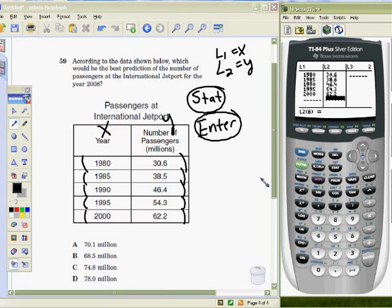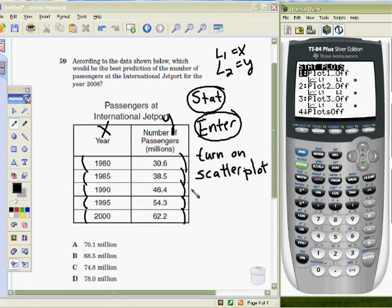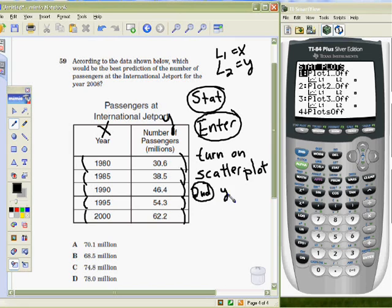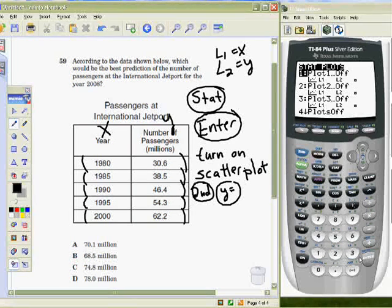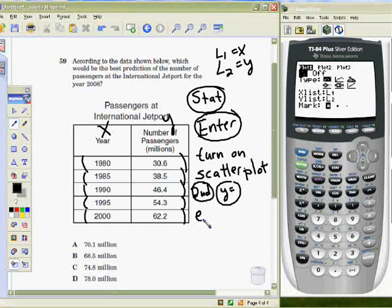Okay, once you have everything entered in, we want to look at the scatter plot that these points create. So we have to do two things. First of all, we have to turn on our scatter plot. The way we do that is 2nd y equals. And we'll see that they're all turned off. We just want to turn one of them on, so hit Enter on one of them, and just hit Enter on on, and it's on. So basically hit Enter two times. That turns on our scatter plot.